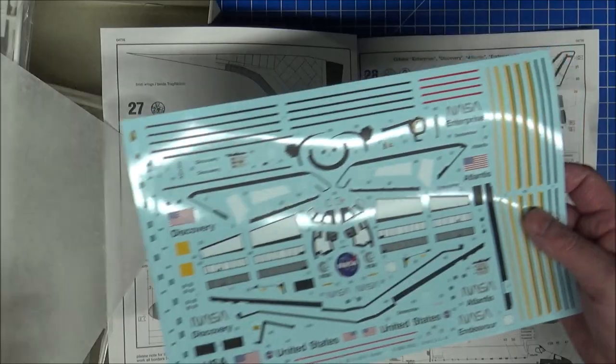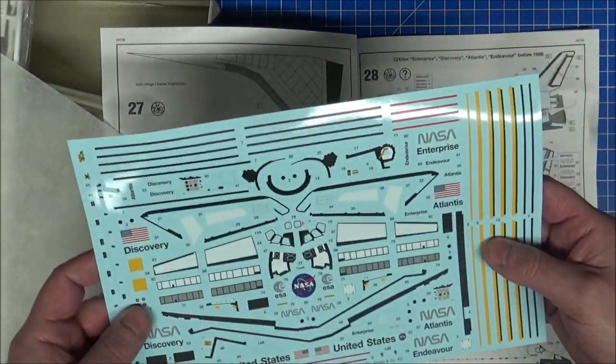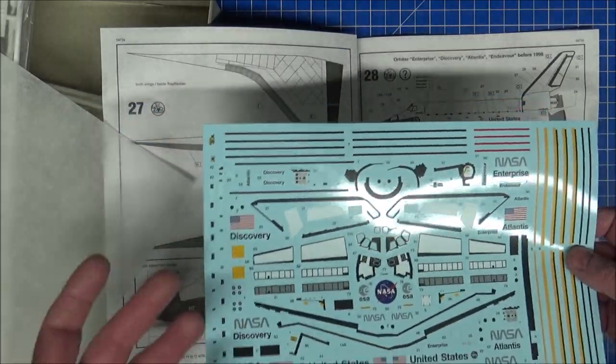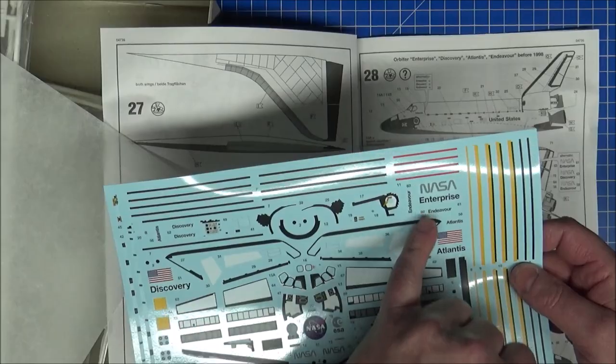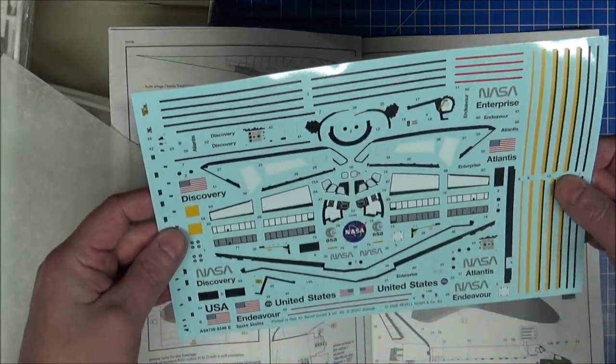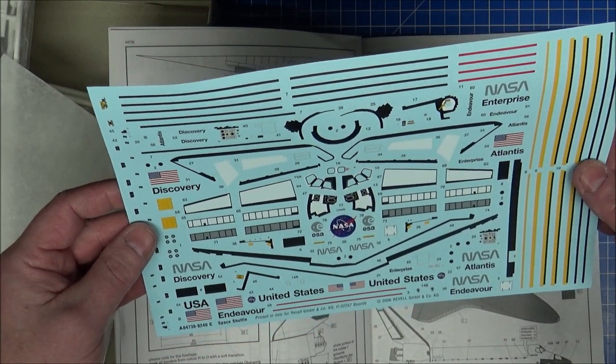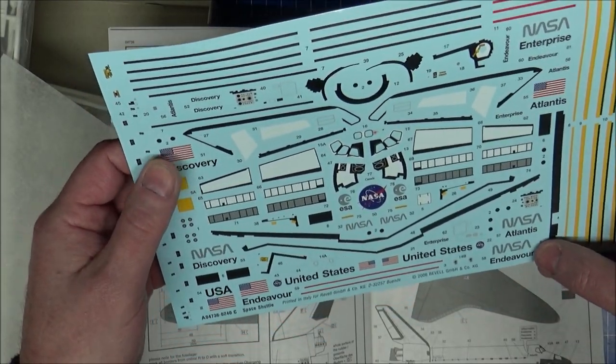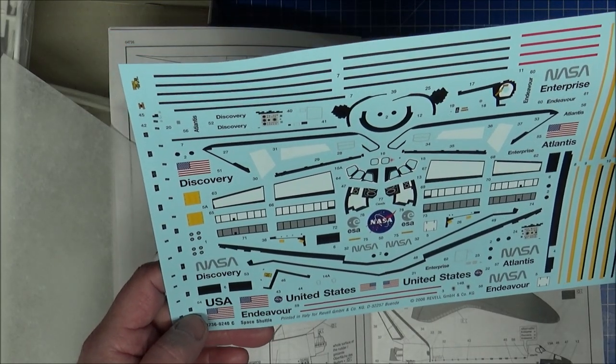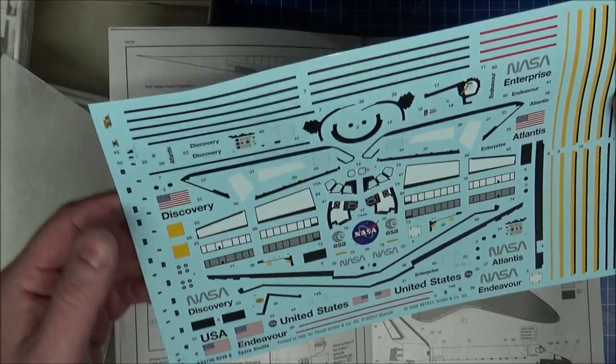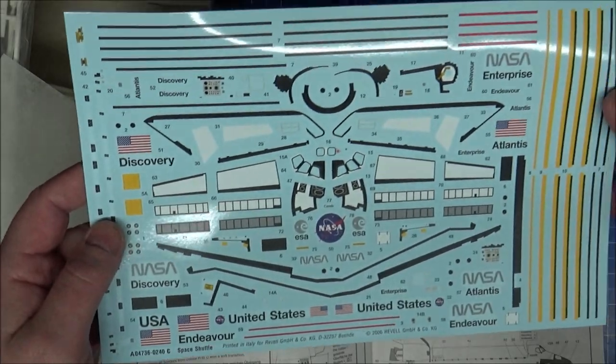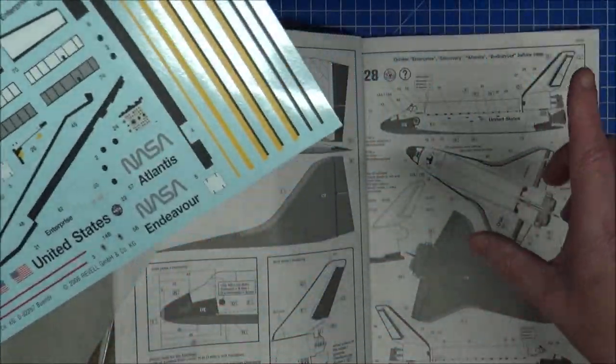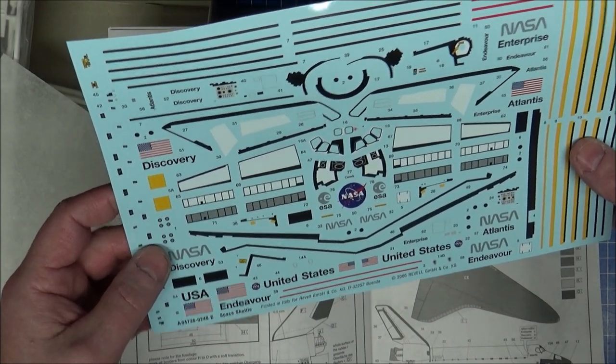I think for some reason in my head Discovery is probably one of the most famous ones that still survives, but I'm probably wrong. I'm going to make the Enterprise. The Enterprise was a mock-up, never got fitted with engines, got moved around as a glider. It just was the test bed. This is an ESA pod that goes on, European Space Agency.